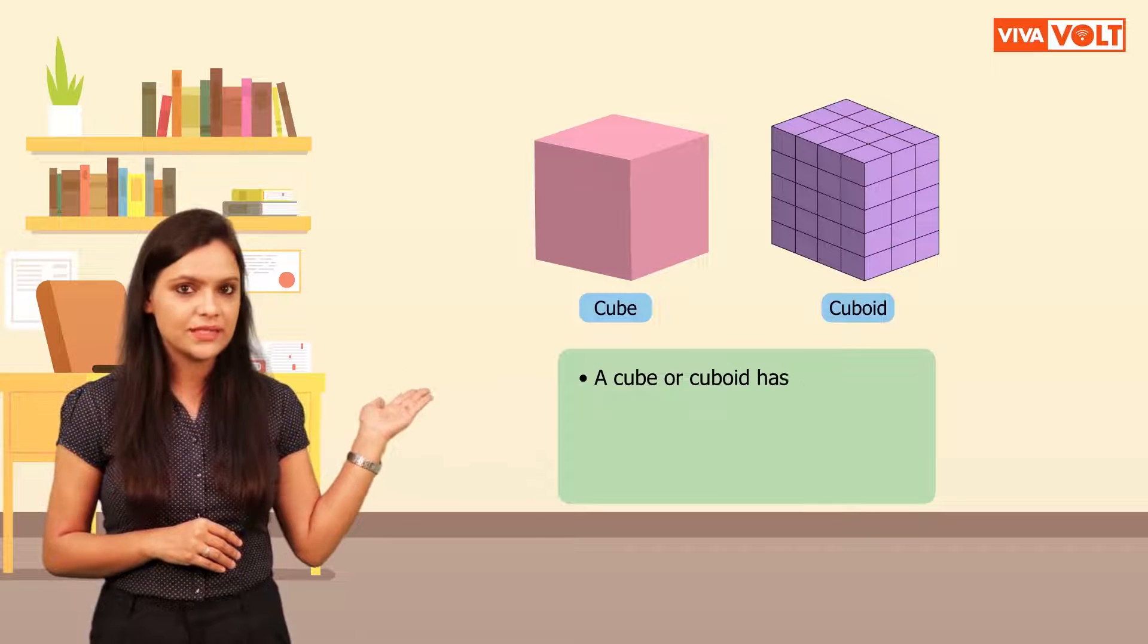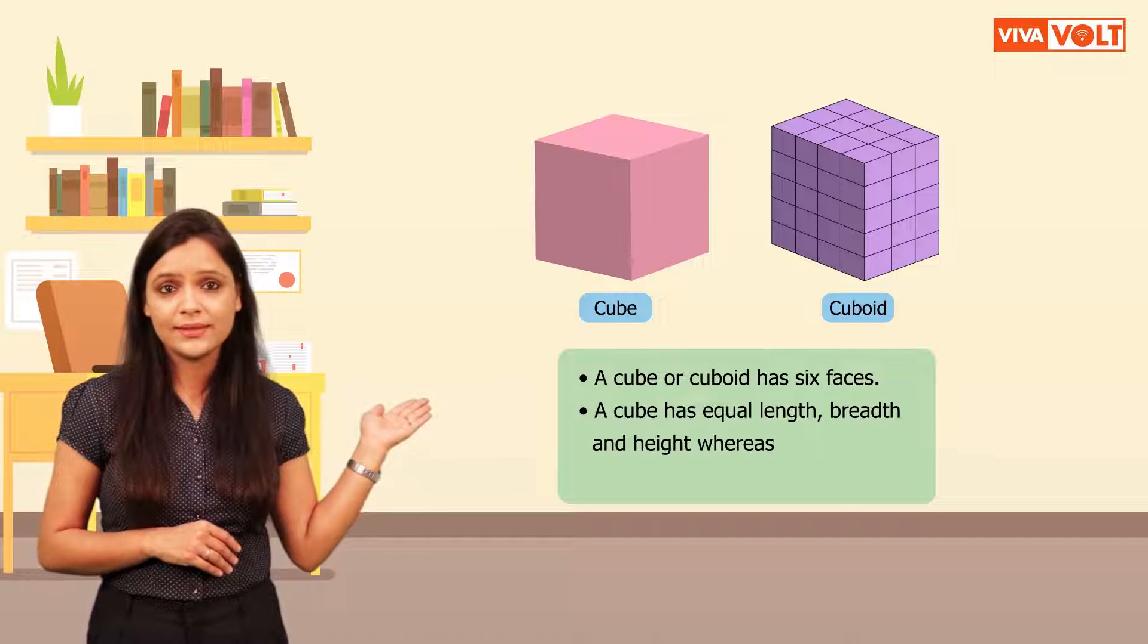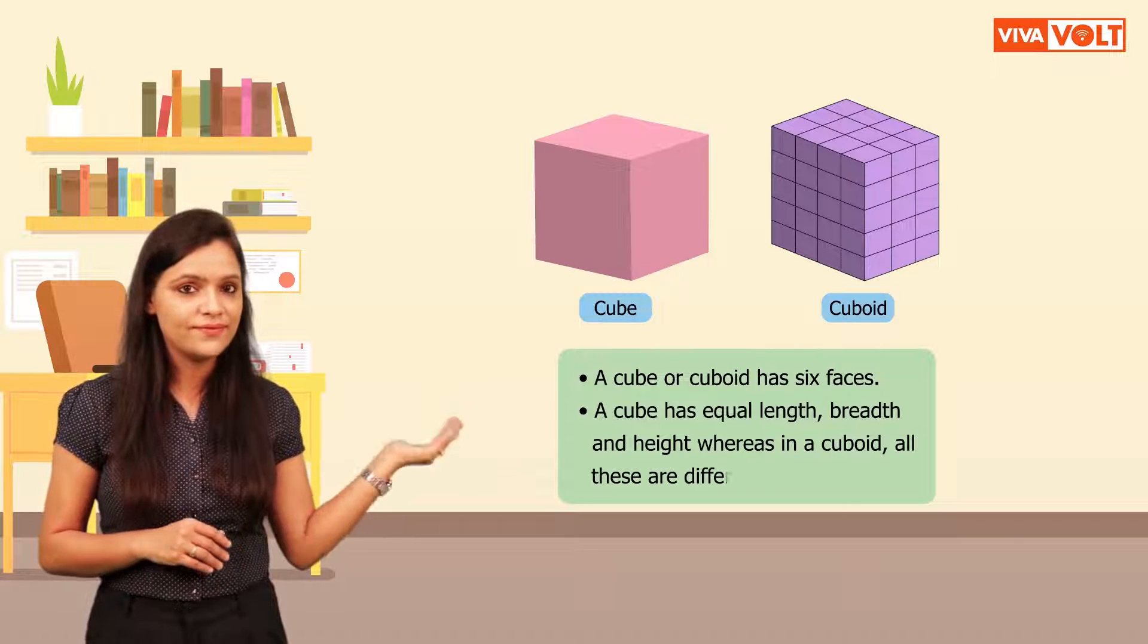Children, please remember these points. A cube or cuboid has 6 faces. A cube has equal length, breadth and height whereas in a cuboid all these are different.